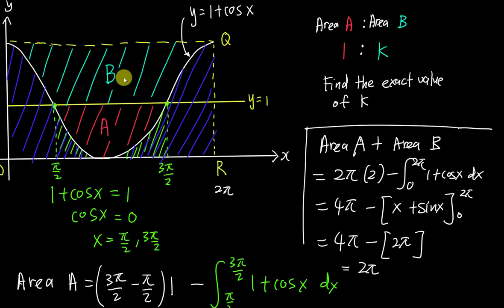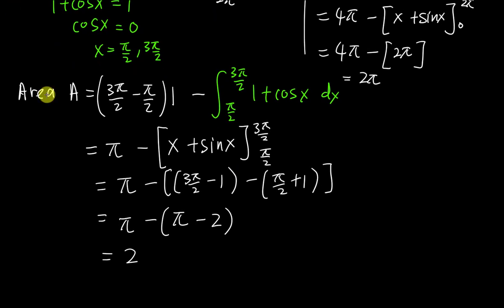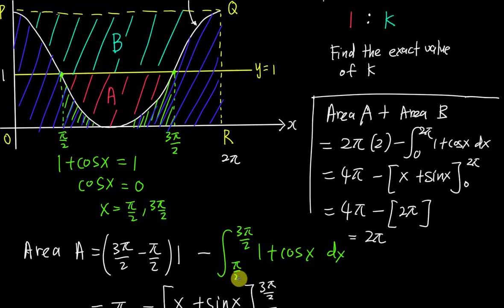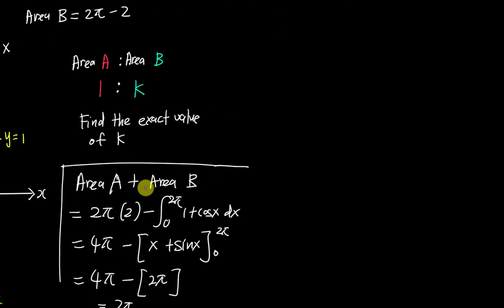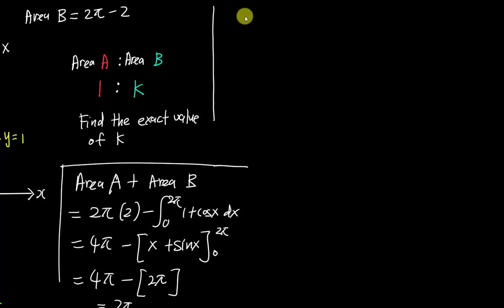If Area A plus Area B is 2π, then from here we can get Area B as well. We already found that Area A is 2, so my Area B is 2π minus 2. Since Area A ratio Area B is 1 ratio k, and my Area A is 2, therefore my Area B should be 2k in the ratio world.